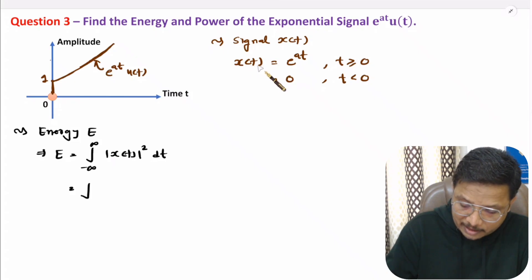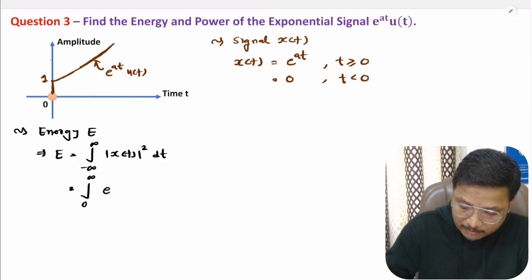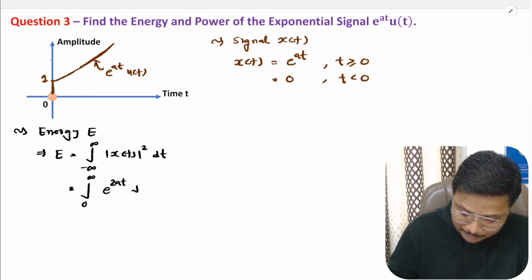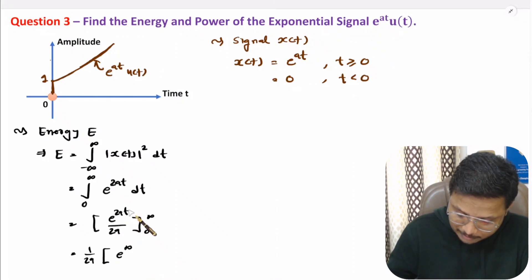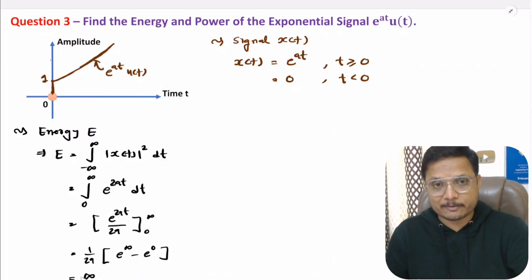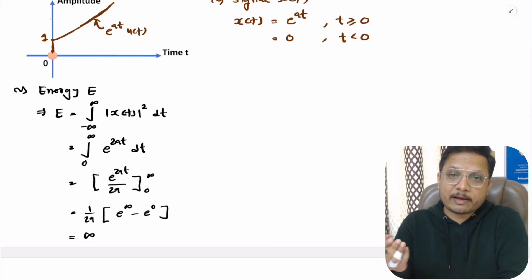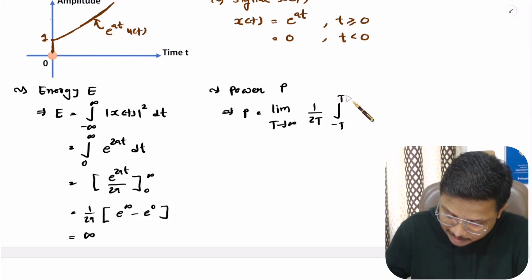Energy E equals integration from minus infinite to plus infinite of the square of the function. Substituting the limit, for t greater than or equal to 0 the limit is from 0 to infinite, and squaring gives e to the power 2at. Integrating gives e to the power 2at by 2a, with limit from 0 to infinite. So 1 by 2a times [e to the power infinite minus e to the power 0]. E to the power infinite is infinite, and e to the power 0 is 1, so energy is infinite.